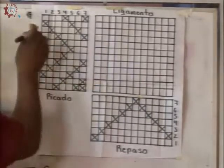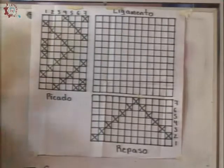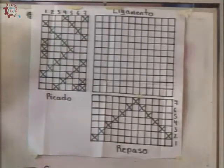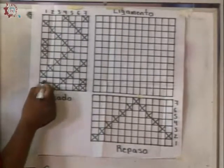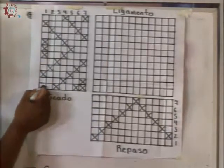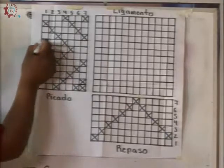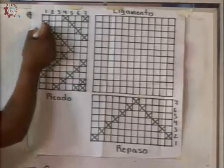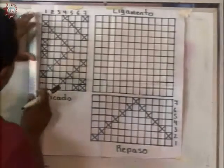Yo aquí tengo mi hilo número uno, y evoluciona. Como les explicaba: tomado, dejado, dejado, tomado. ¿Cómo funciona esto? Los cuadritos que no tienen nada son dejados. Entonces: dejo dos, tomo uno, dejo dos, tomo tres, dejo dos y tomo uno.